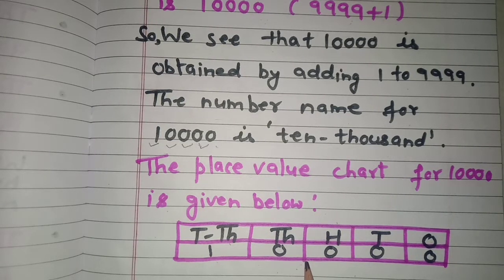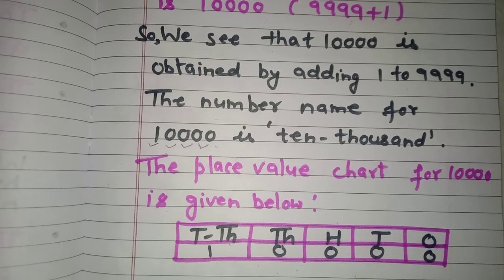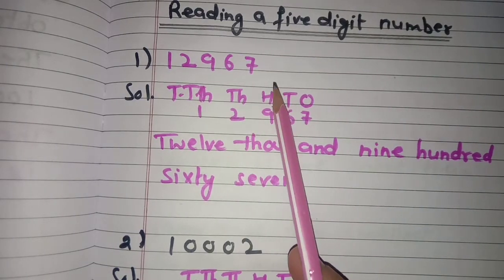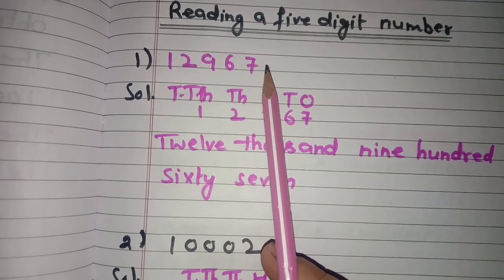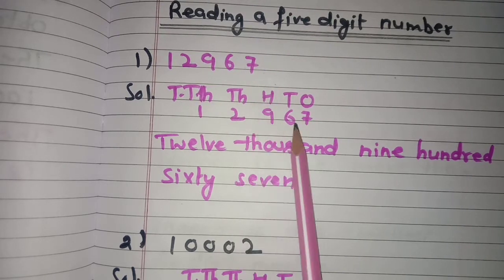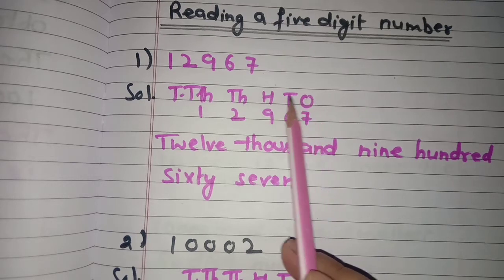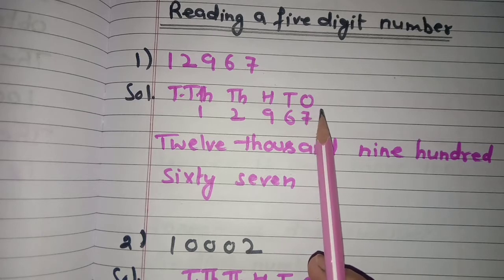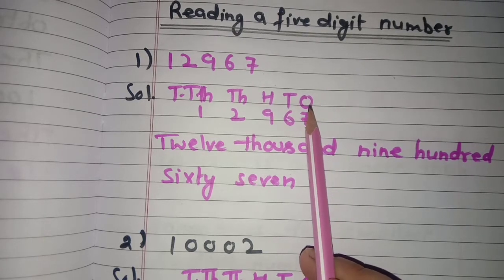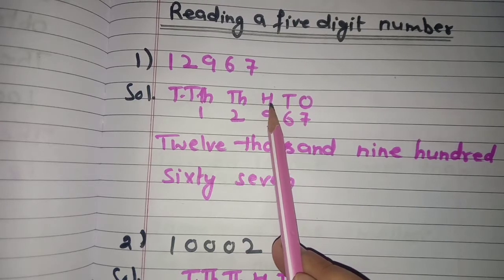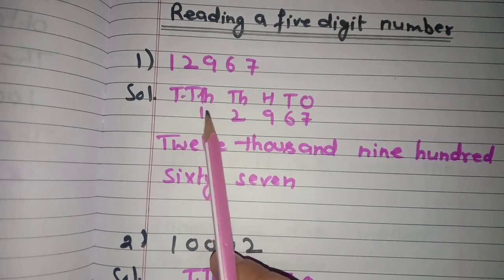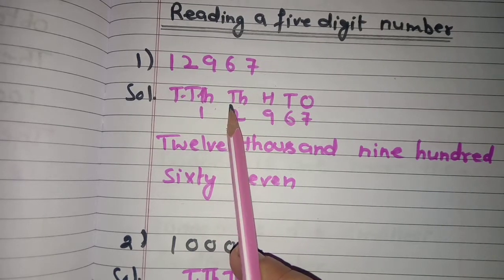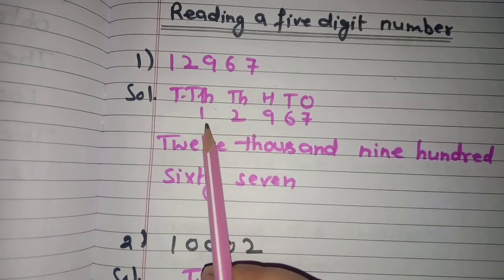Now, how to read a five digit number. Suppose we have the number 12,967. Write down this number and mention the places above it, starting from the extreme right: ones, tens, hundreds, thousands, and ten thousands.